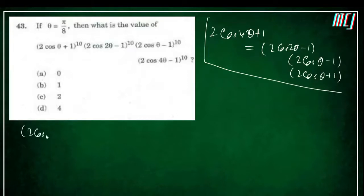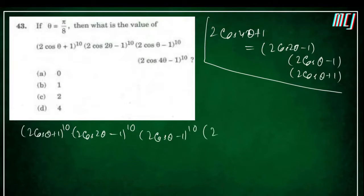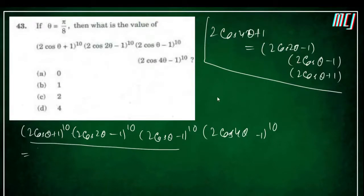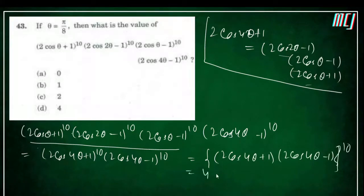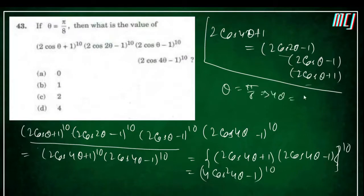Given: (2cosθ + 1)¹⁰ · (2cos2θ − 1)¹⁰ · (2cosθ − 1)¹⁰ · (2cos4θ − 1)¹⁰. Multiplying the first three terms gives (2cos4θ + 1)¹⁰. So we have (2cos4θ + 1)¹⁰ · (2cos4θ − 1)¹⁰ = (4cos²4θ − 1)¹⁰. With θ = π/8: 4θ = π/2, cos(π/2) = 0, so (4·0 − 1)¹⁰ = (−1)¹⁰ = 1.